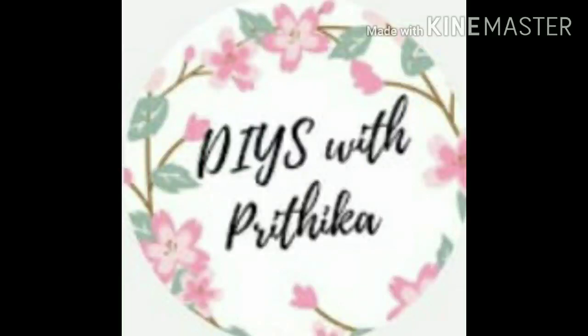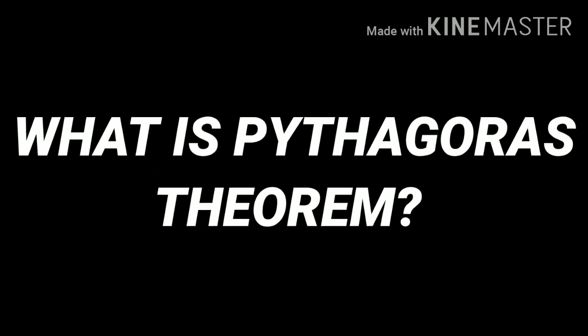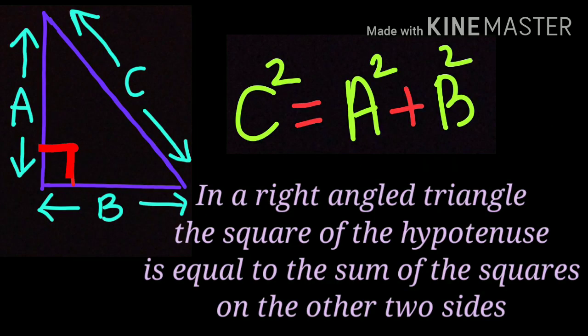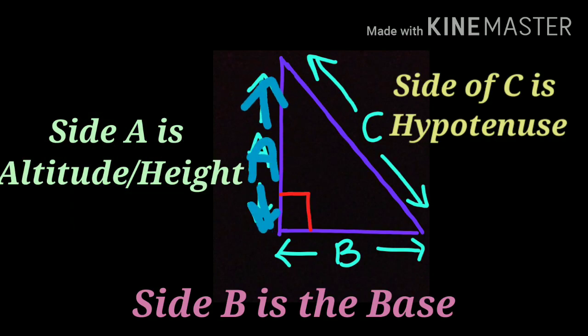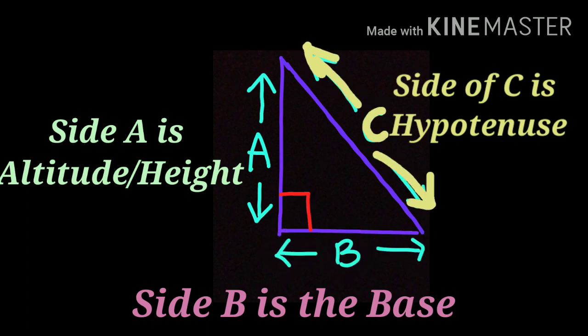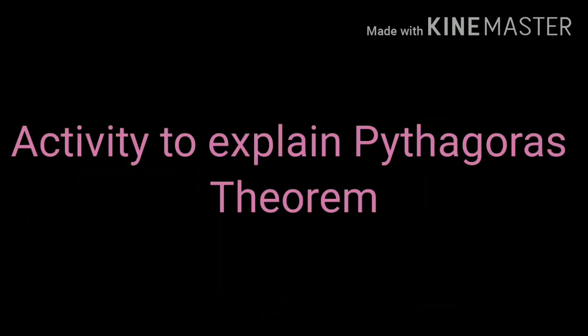Hello again friends, today we are going to do this activity based on the evergreen Pythagorean theorem. What is the Pythagorean theorem? In a right-angled triangle, the square of the hypotenuse is equal to the sum of the squares on the other two sides. Side A is altitude or height, side B is base, side C is the hypotenuse.